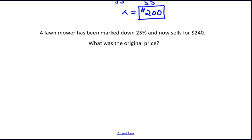Because we are marked down 25%, that means that we paid 75% of the original price of the mower. 75% was achieved by taking 100% minus 25%. At this point, we will do a proportion.